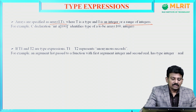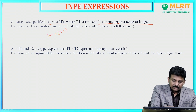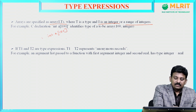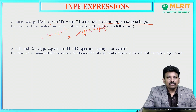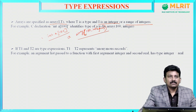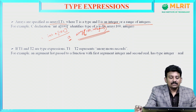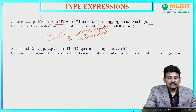For example, in C language, you can declare int a[100]. That means a is an array of 100 integers. We can read this declaration as: a is an array of 100 integers. Arrays are specified as array(i, t), where t is a type and i is an integer or a range of integers.